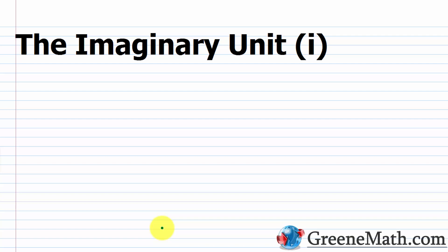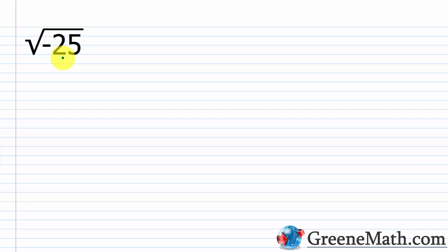In this lesson, we want to review the imaginary unit i. In elementary algebra courses, we typically don't deal with the square root of a negative number. If we see something like the square root of negative 25, we know that using the real number system, we can't get a solution. A lot of times we would see this and say no real solution. But as we progress through algebra, we learn that there is a way to deal with this scenario.